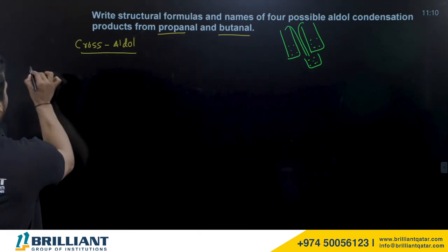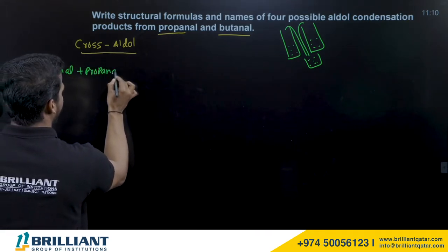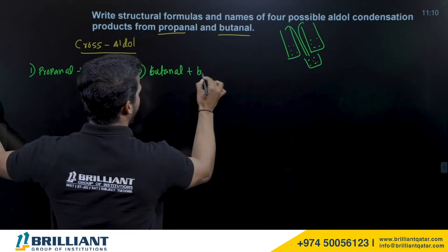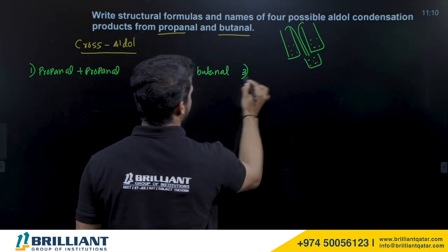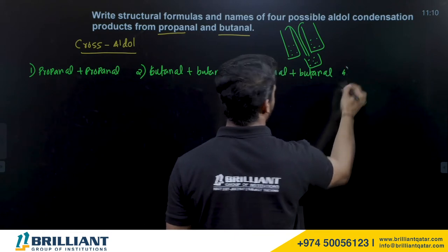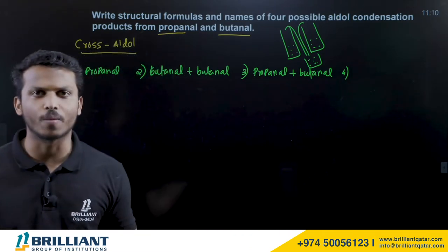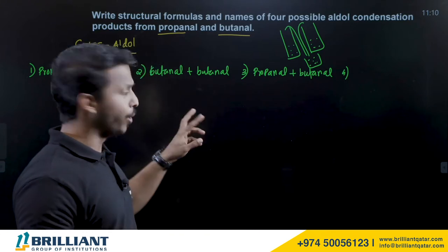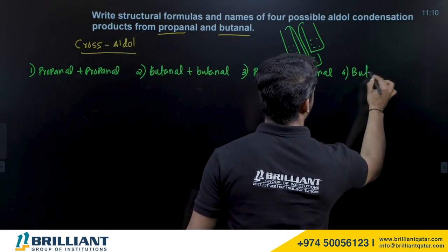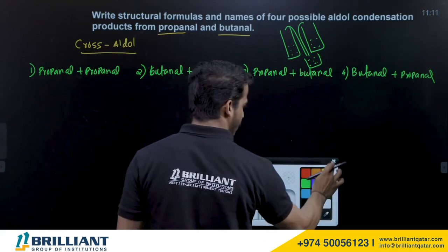The four possible combinations are: (1) propanol reacting with propanol, (2) butanol reacting with butanol, (3) propanol reacting with butanol, and (4) butanol reacting with propanol. Although combinations 3 and 4 seem the same, they are different because which molecule acts as the enol donor differs.